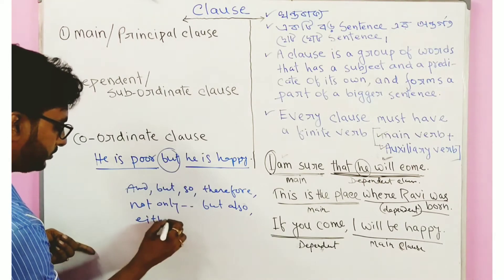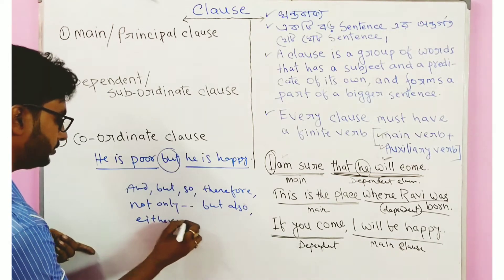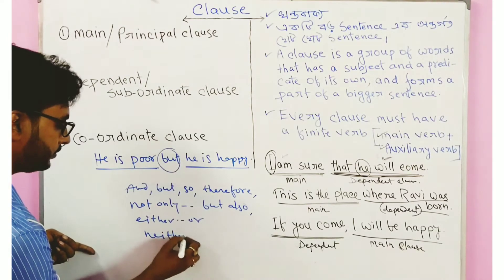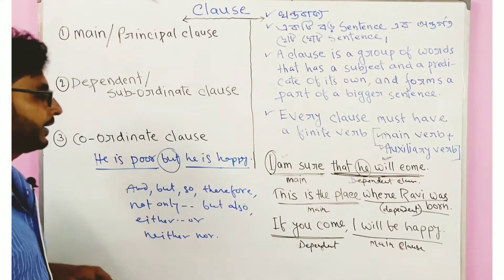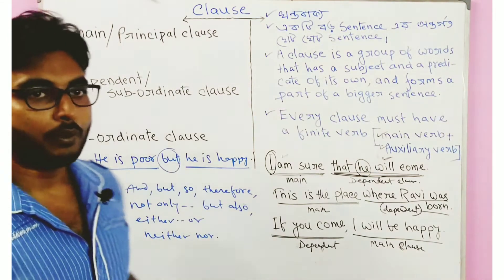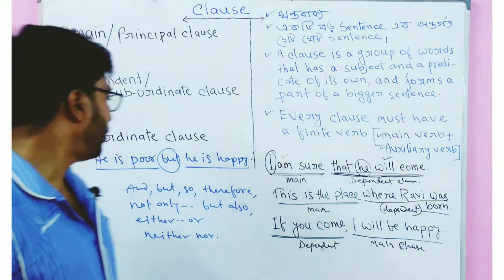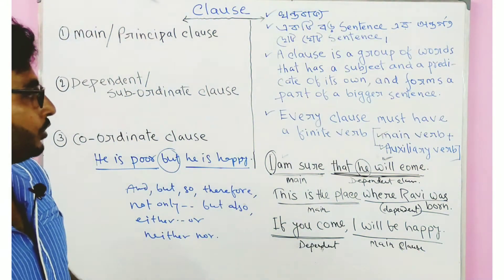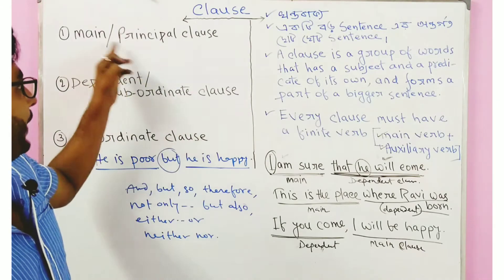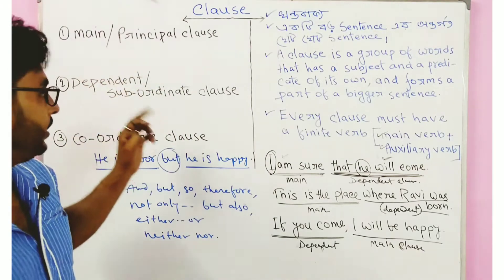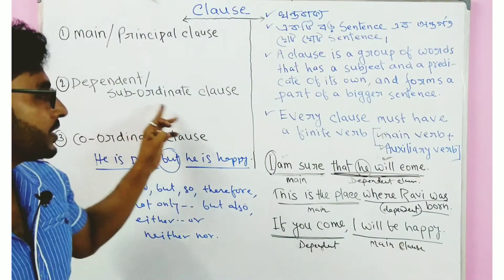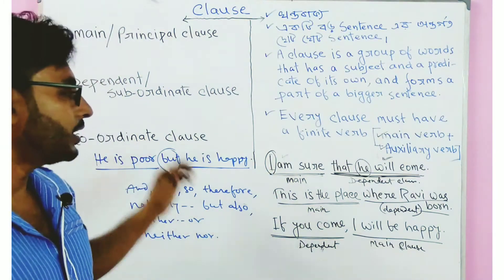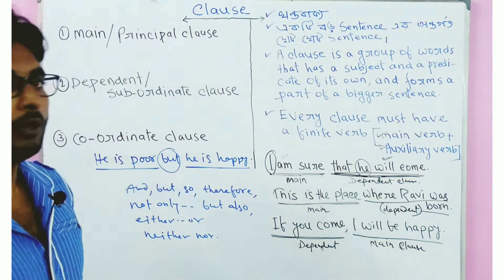Other coordinating conjunctions include: either/or, neither/nor. These are called coordinating conjunctions and the clause formed is called a coordinate clause. So we have three types: main clause, dependent clause, and coordinate clause.